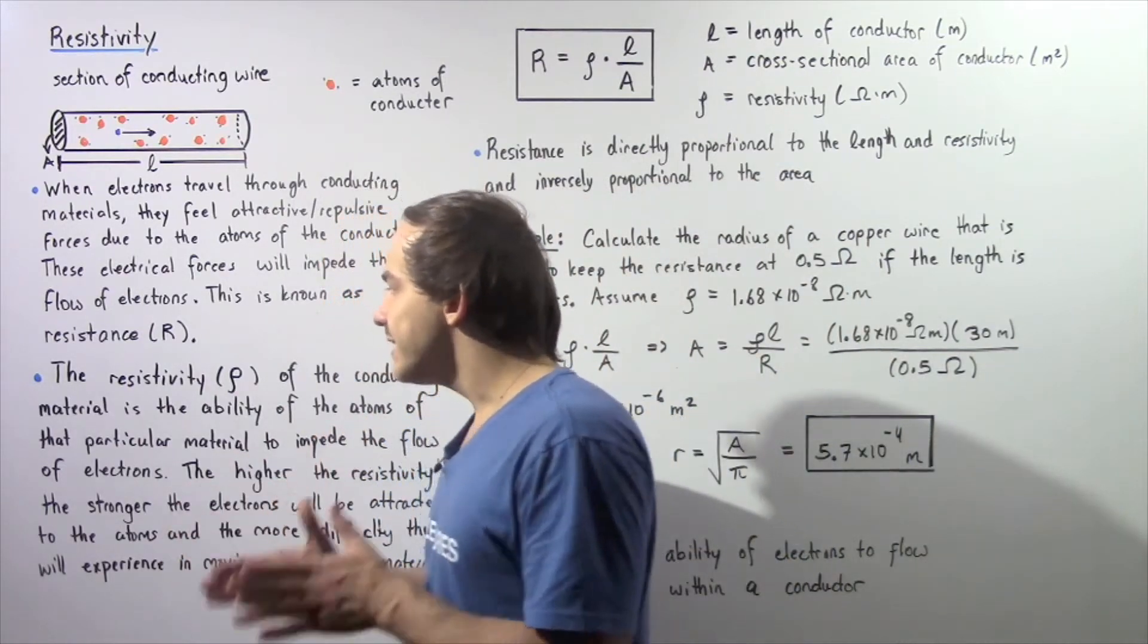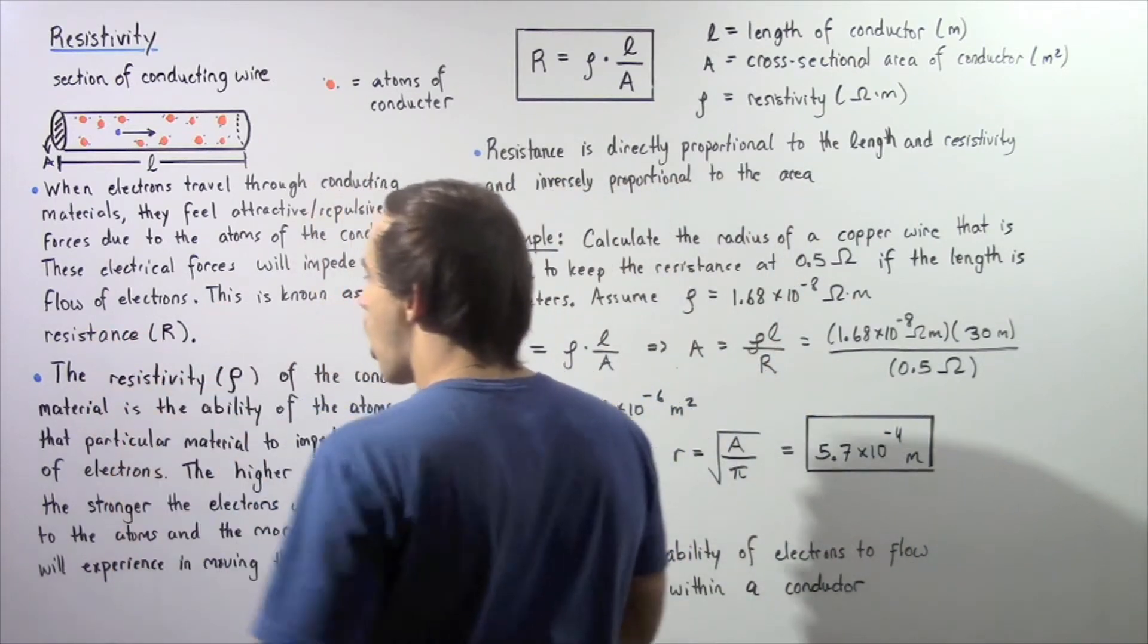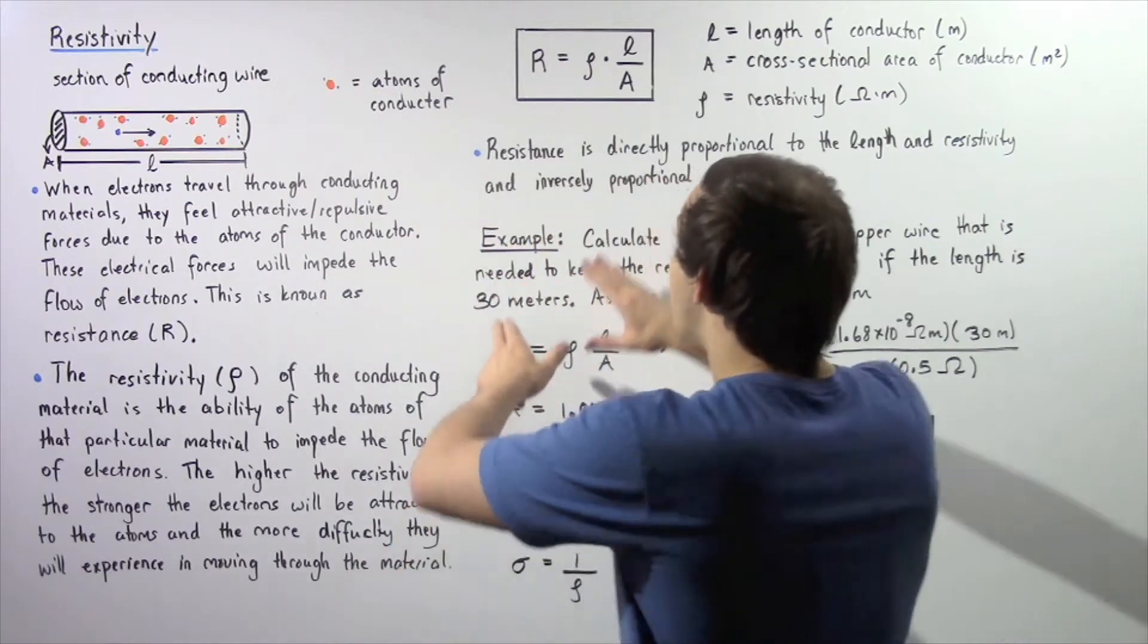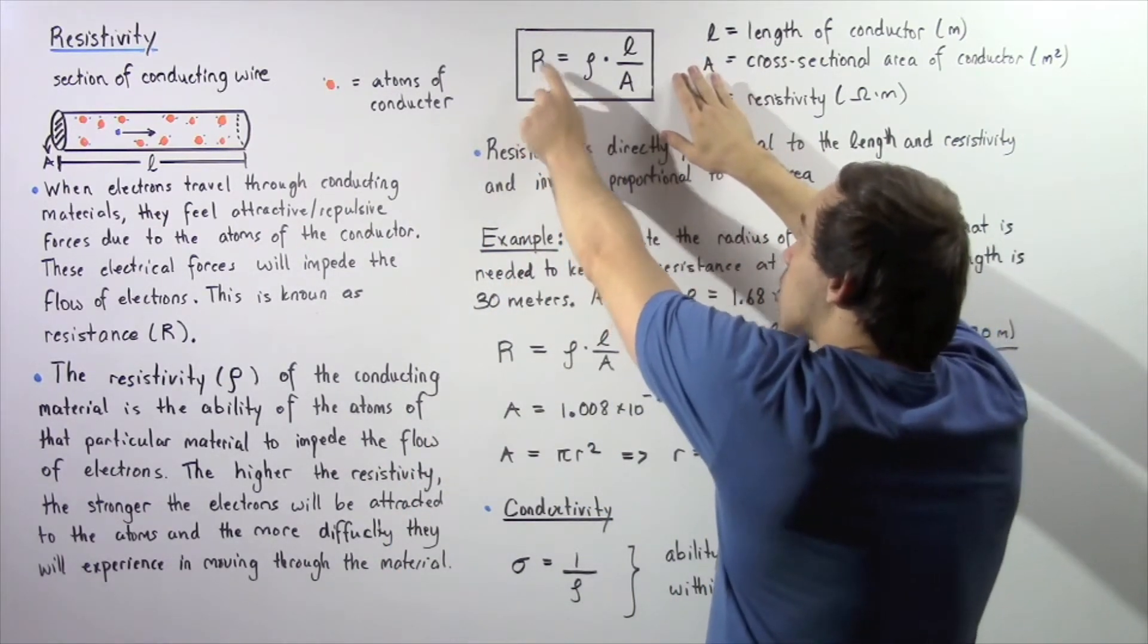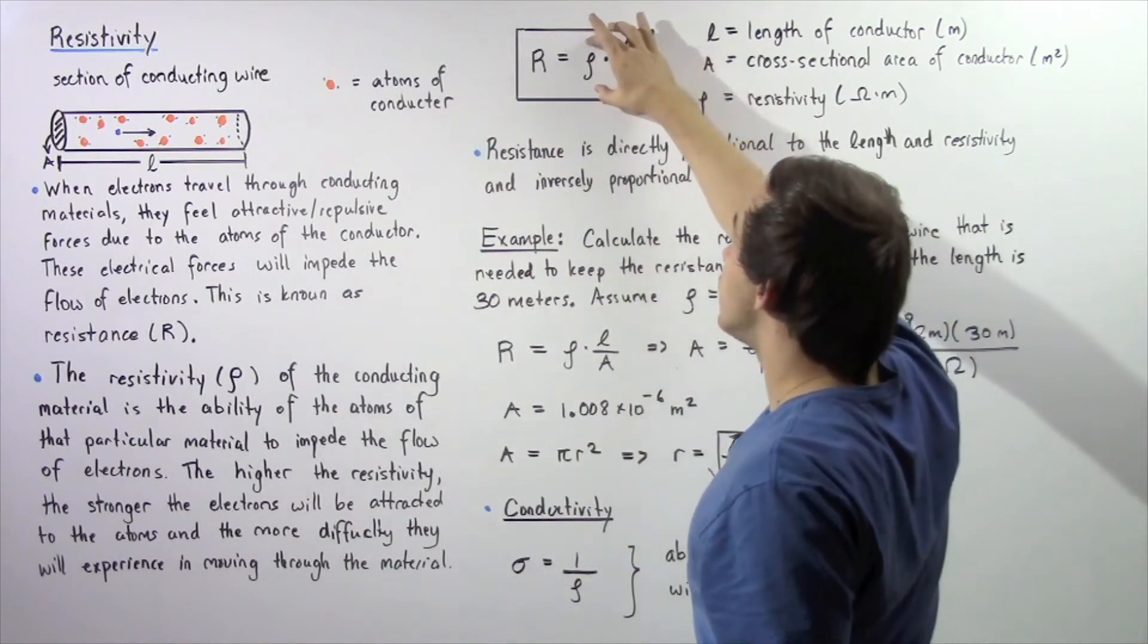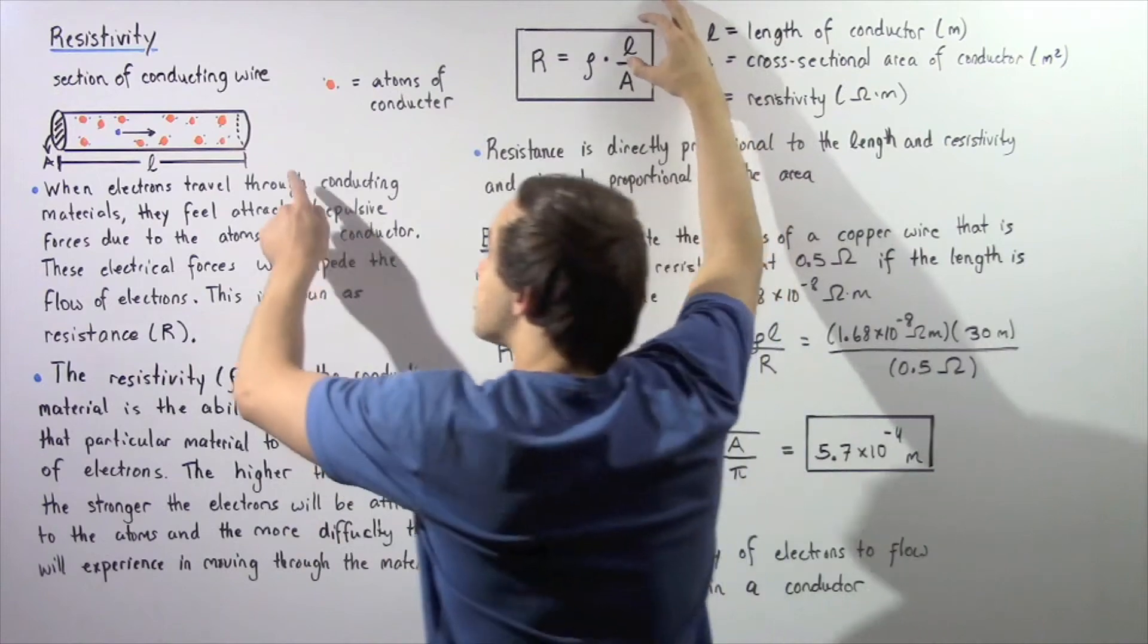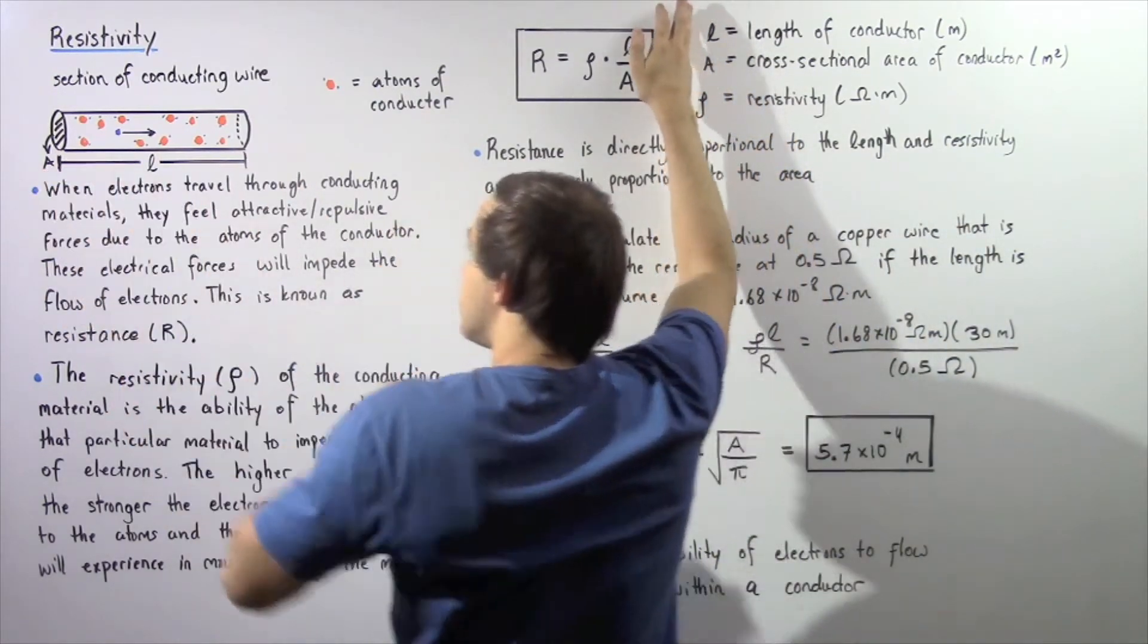What exactly is the relationship between resistance given by R and resistivity given by ρ? It's given by the following equation: our resistance R equals the product of ρ, our resistivity, multiplied by the length of our wire divided by the cross-sectional area of that wire.